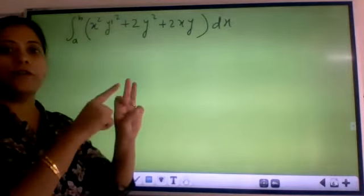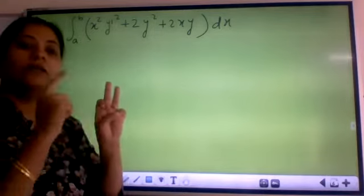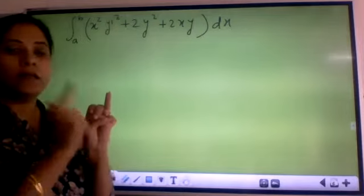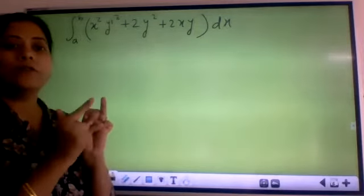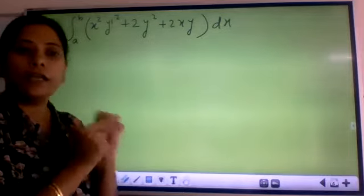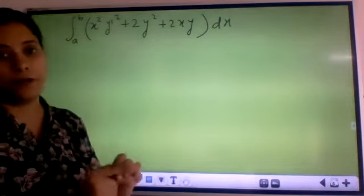My key steps are: first find out ∂f/∂y, then find out ∂f/∂y', and then the third step is you substitute it in Euler's equation which is a necessary condition for any functional to have the extremal.